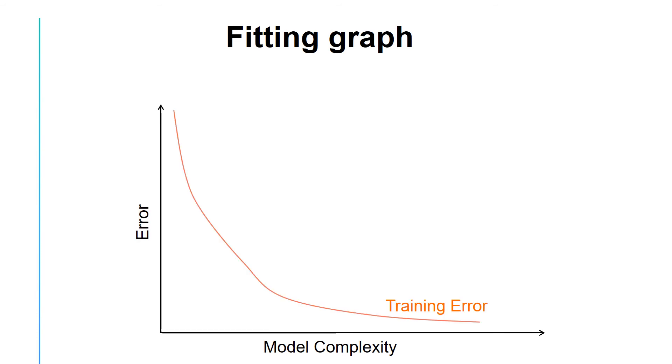If we plot the training error, we will see that as the model gains complexity, the error decreases. This is because we have more flexibility, so we choose a function that best fits our training data. This shows in-sample performance.